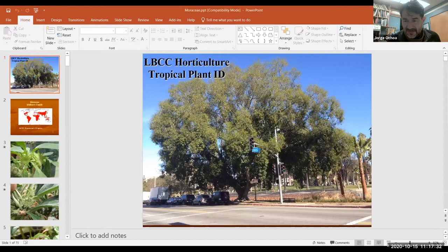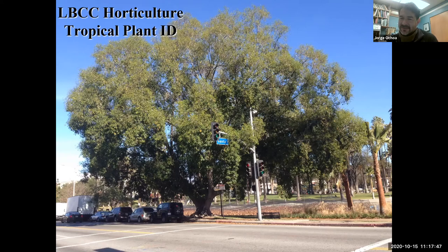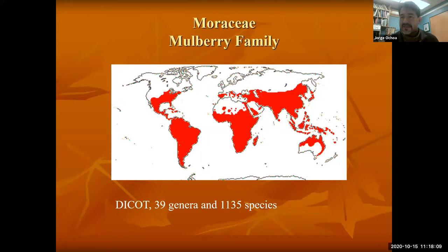Welcome to the discussion about the mulberry and the mulberry family for our plant ID course. We get to talk about this family that is very important and has some very interesting characteristics. We're going to talk about the mulberry family Moraceae, named after Morus, the mulberry tree, which is scattered throughout the different tropical areas of the world.